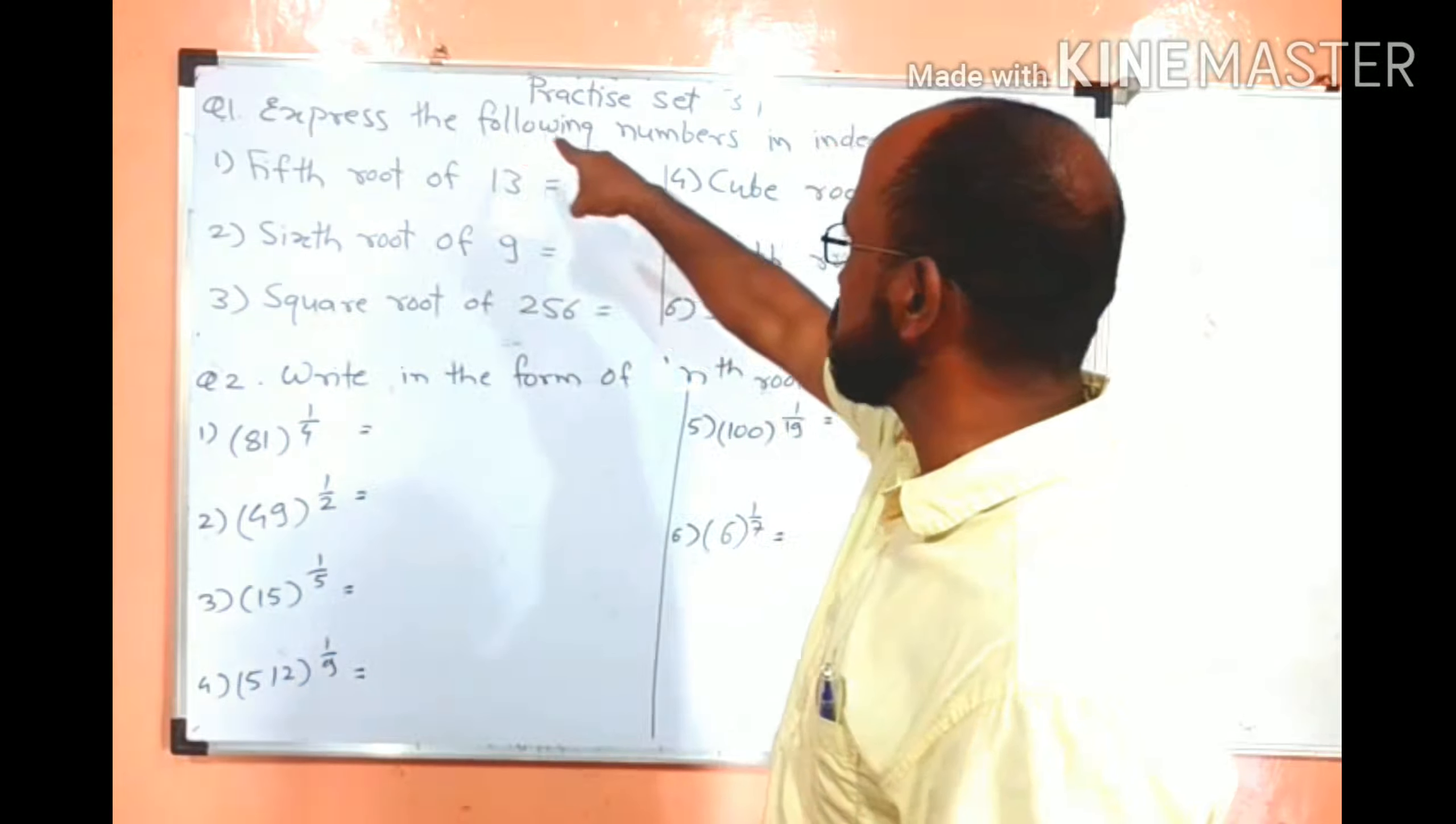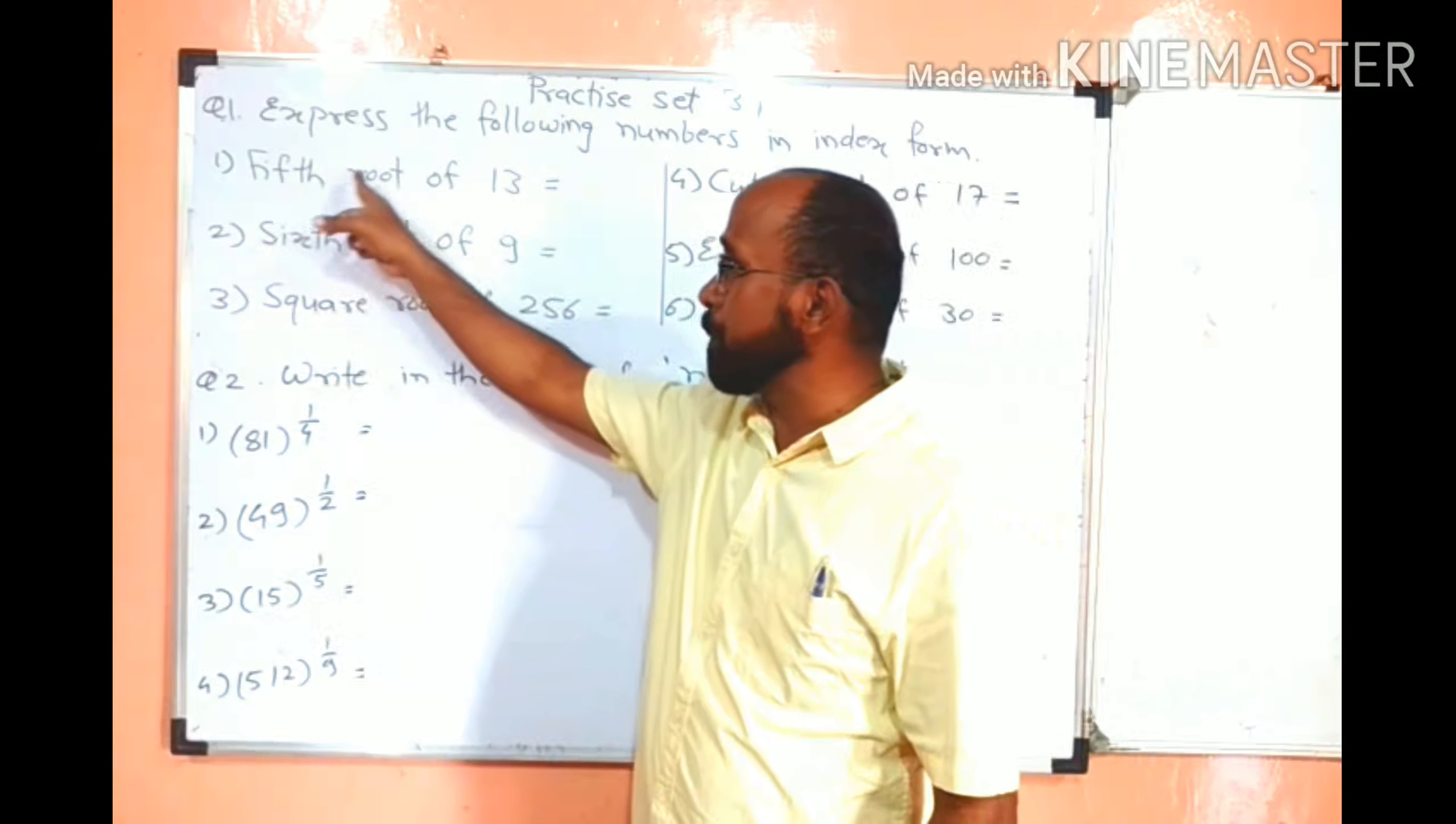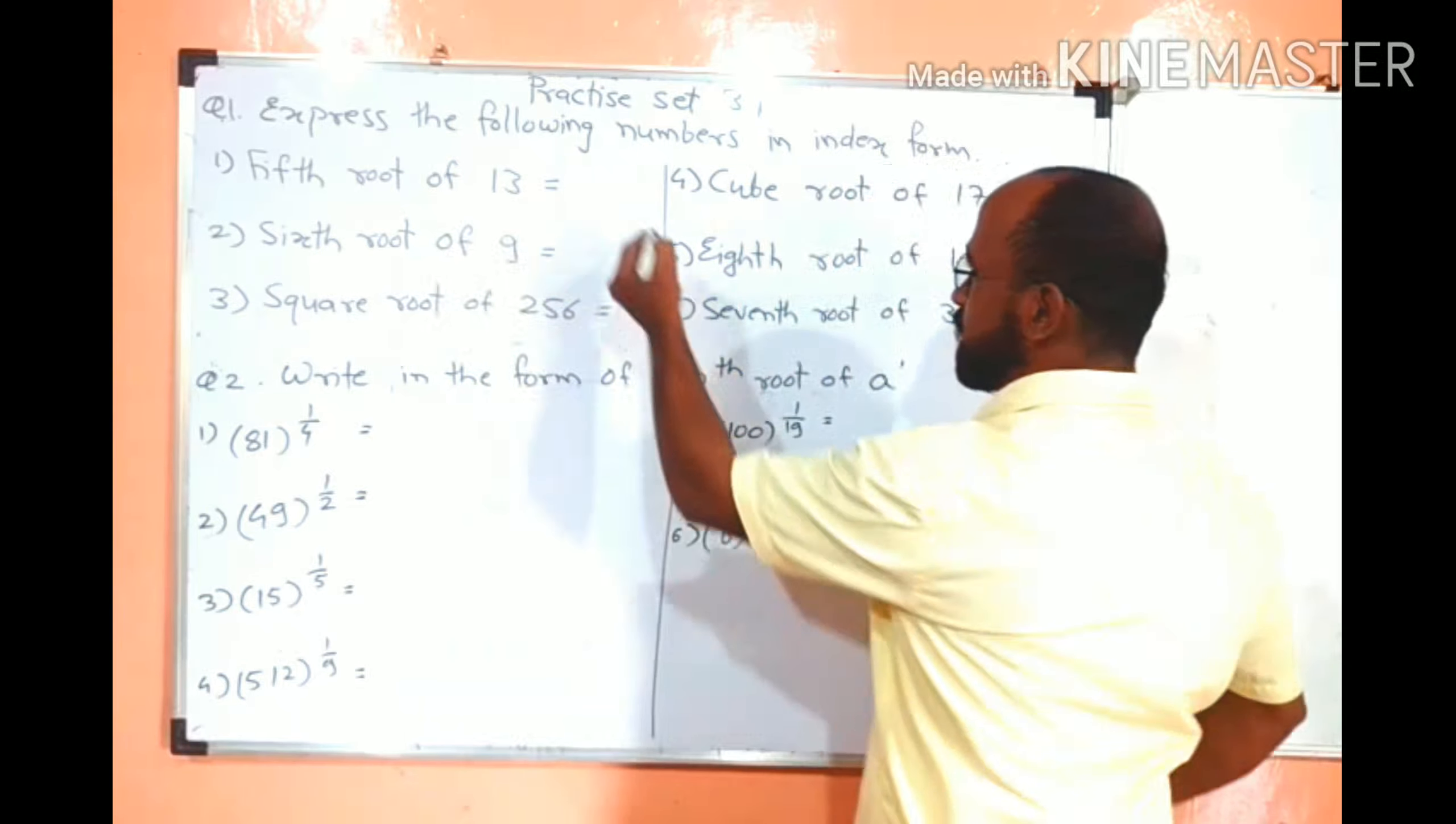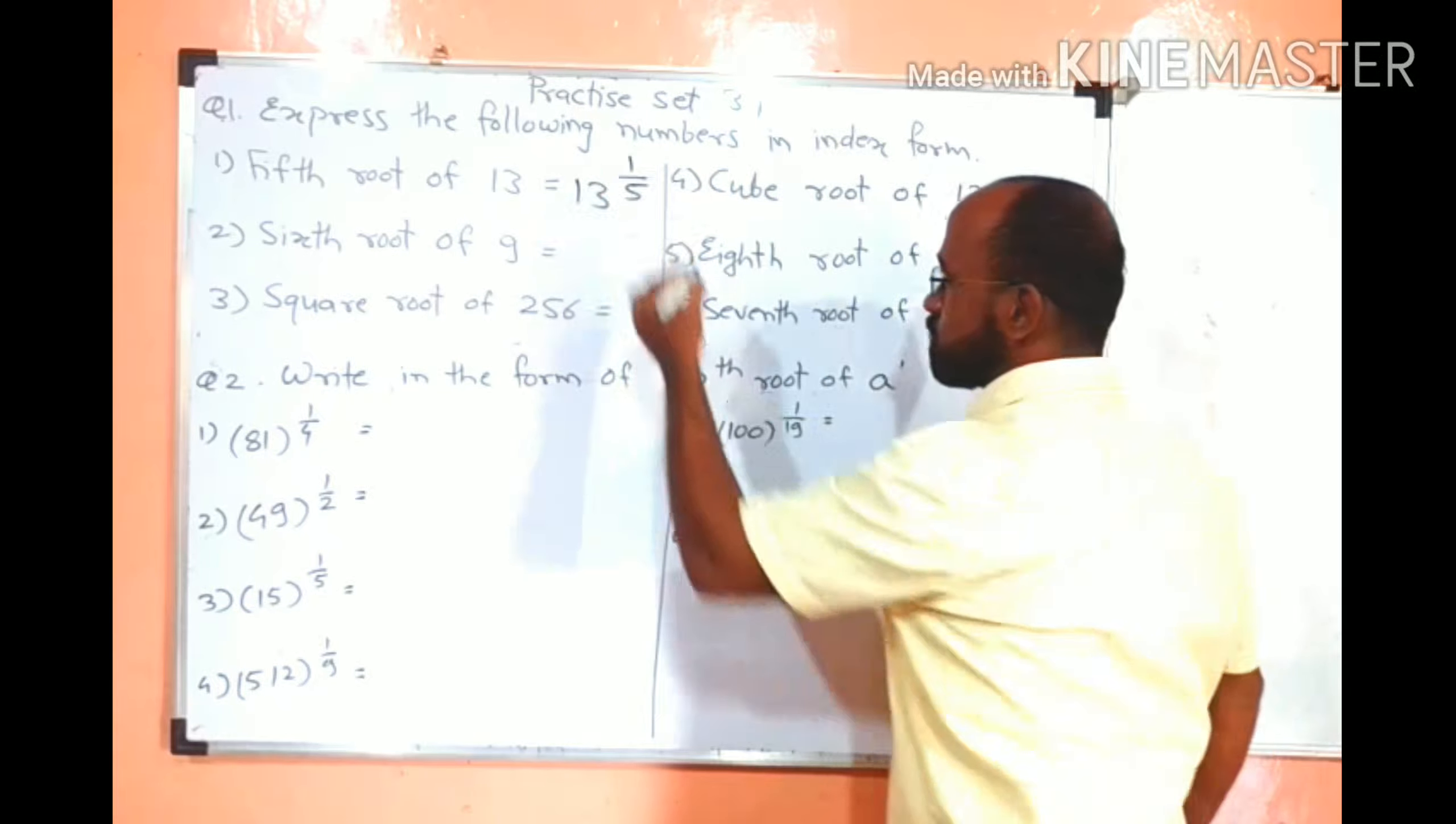Question 1. Express the following numbers in index form. We have to express this number, it is written in root form, we have to write it in index form. What is the question? 5th root of 13. What is the root? 5. Which root is there? 5th root of 13. So 13 is the base and root is 5th, means we have to write inverse of 5th, 13 raised to 1 upon 5. Easy? Super easy.